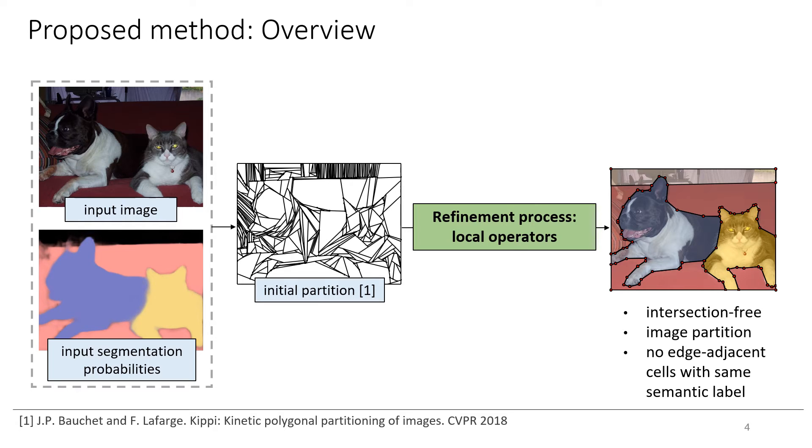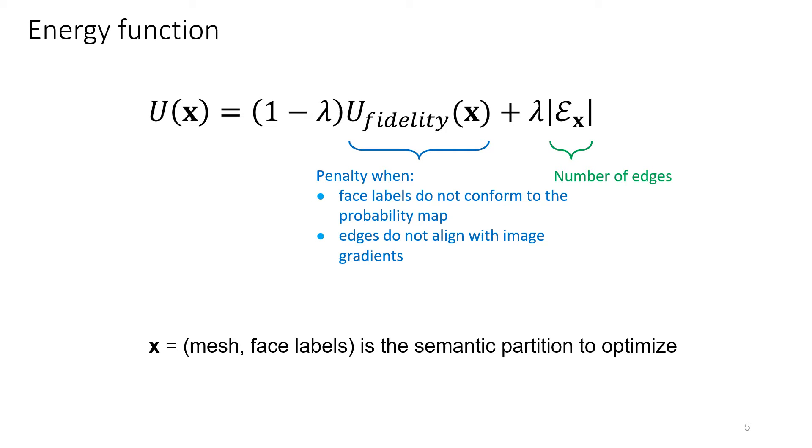By construction, output polygons are guaranteed to recover the entire image domain without intersection and not containing adjacent cells with the same semantic label. We propose an energy function for measuring the quality of semantic polygonal partitions.